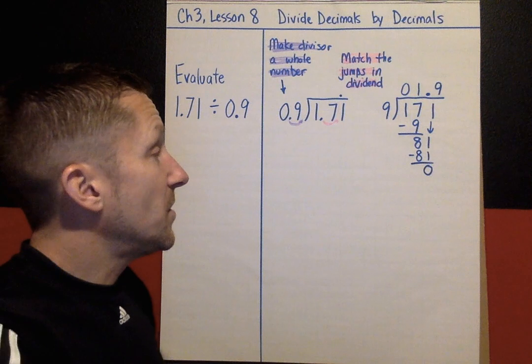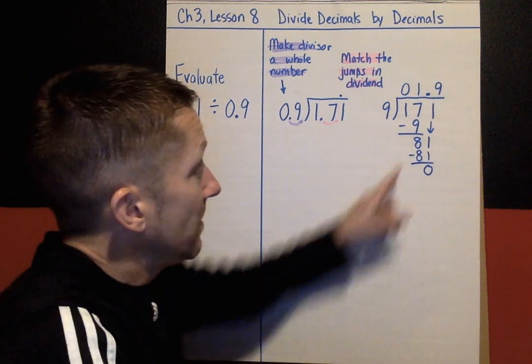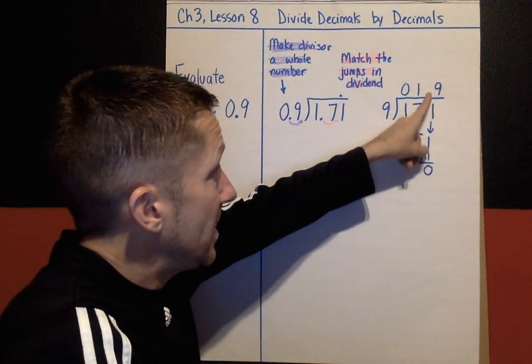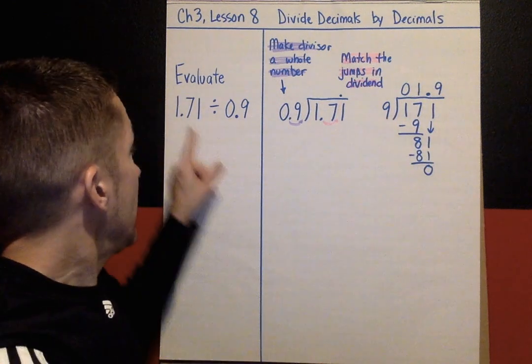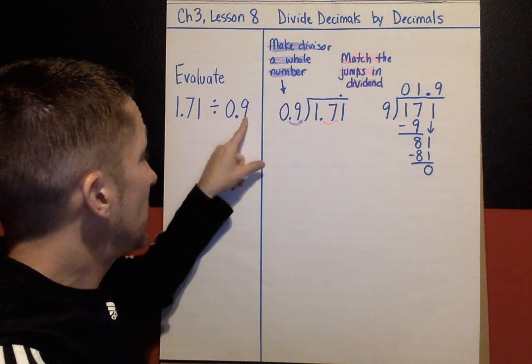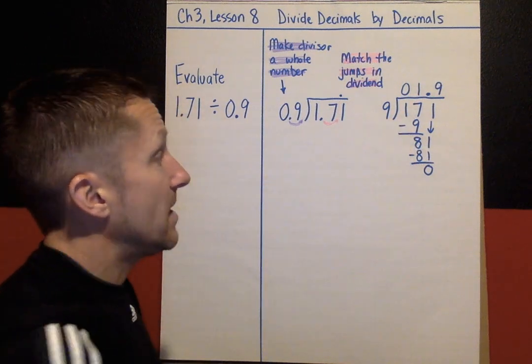9 times 9 is 81. Subtract, we have nothing left. No more numbers to bring down, and our decimal, again, is right there. So the answer is 1.9. 1.71 divided by 0.9, the answer is 1.9.